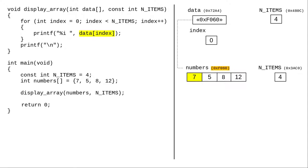That means, for example, when index is zero, data[index] retrieves the value that's stored in the numbers array.